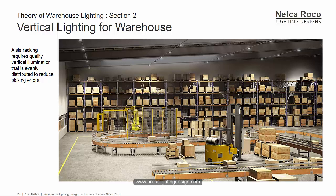Aisle racking requires quality vertical illumination that is evenly distributed to reduce picking errors. So vertical lighting for a warehouse is very important. Vertical lighting is not only for sports lighting or retail shop but also for the warehouse because of these boxes and shelvings that are in the vertical position.